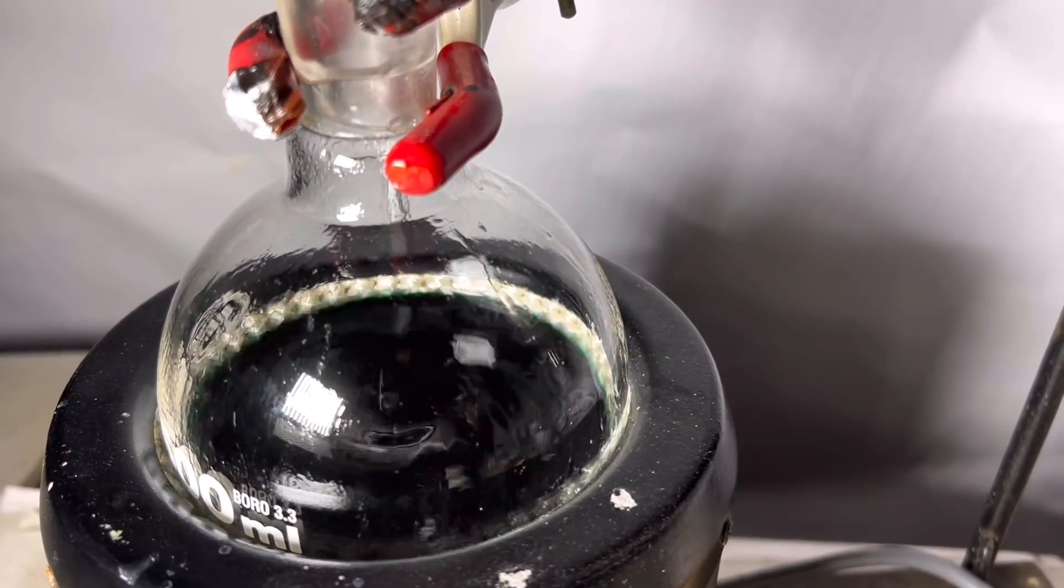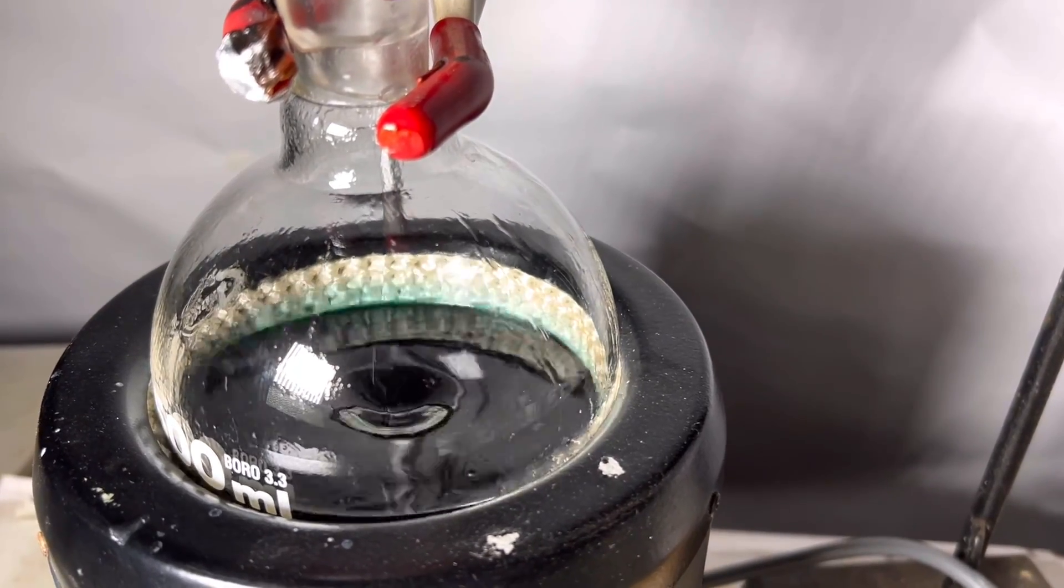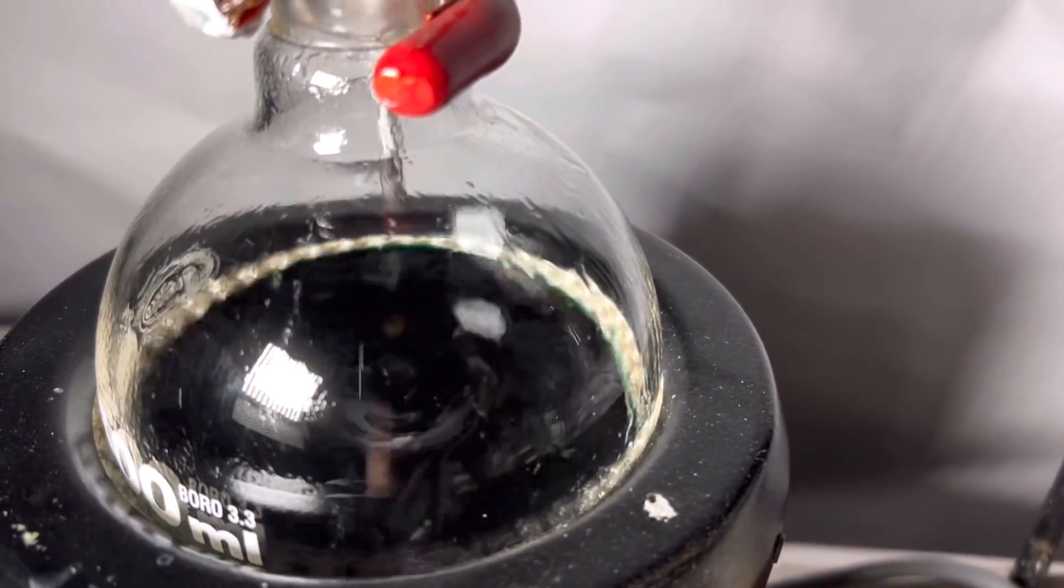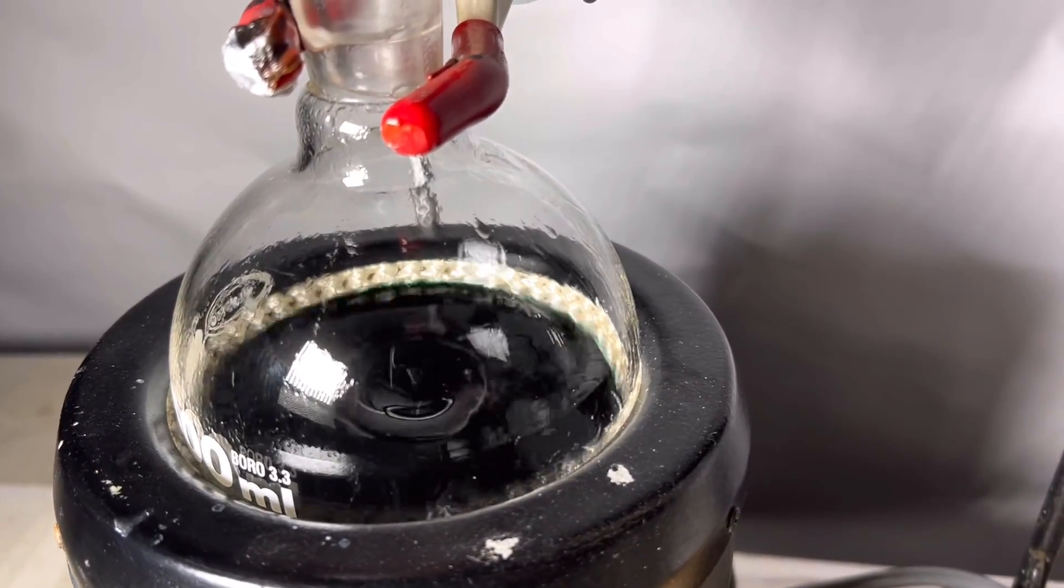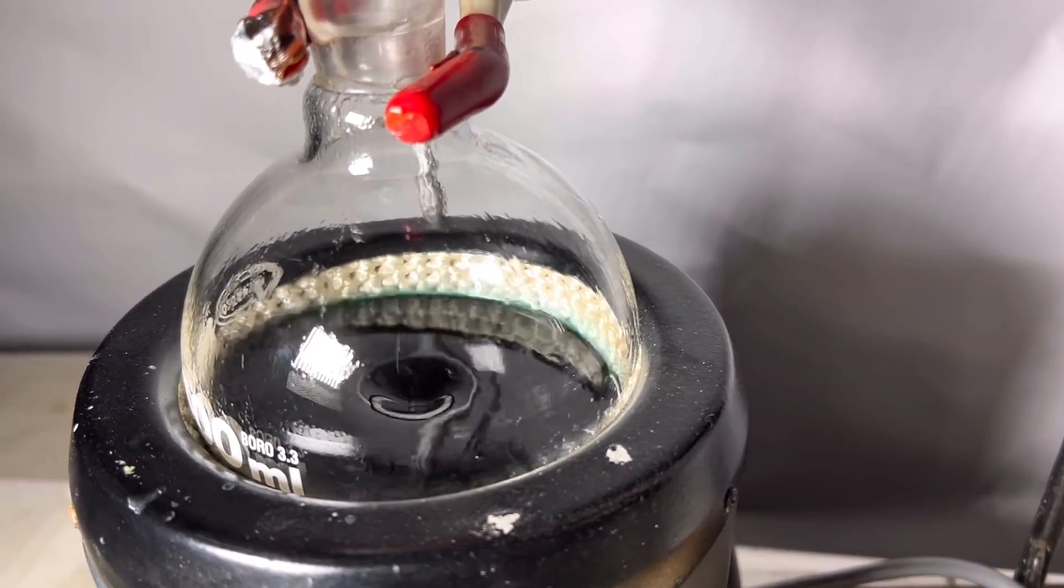After two hours we stop the reflux. The solution inside the flask has a deep green color due to the formation of the trivalent chromium. The compound formed is chromium sulfate.